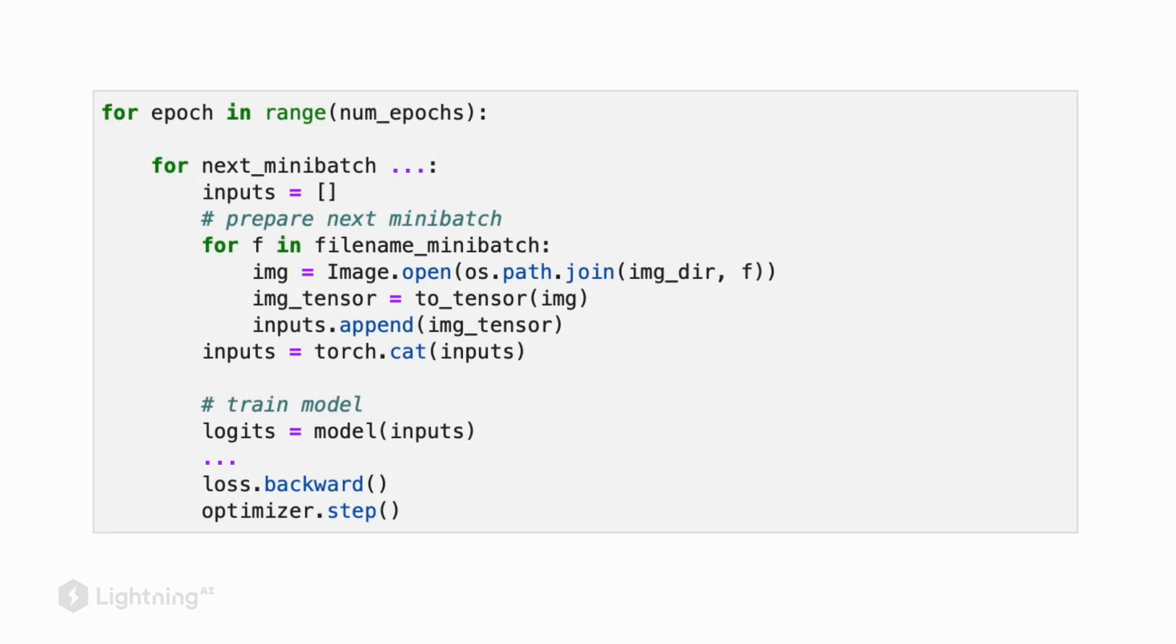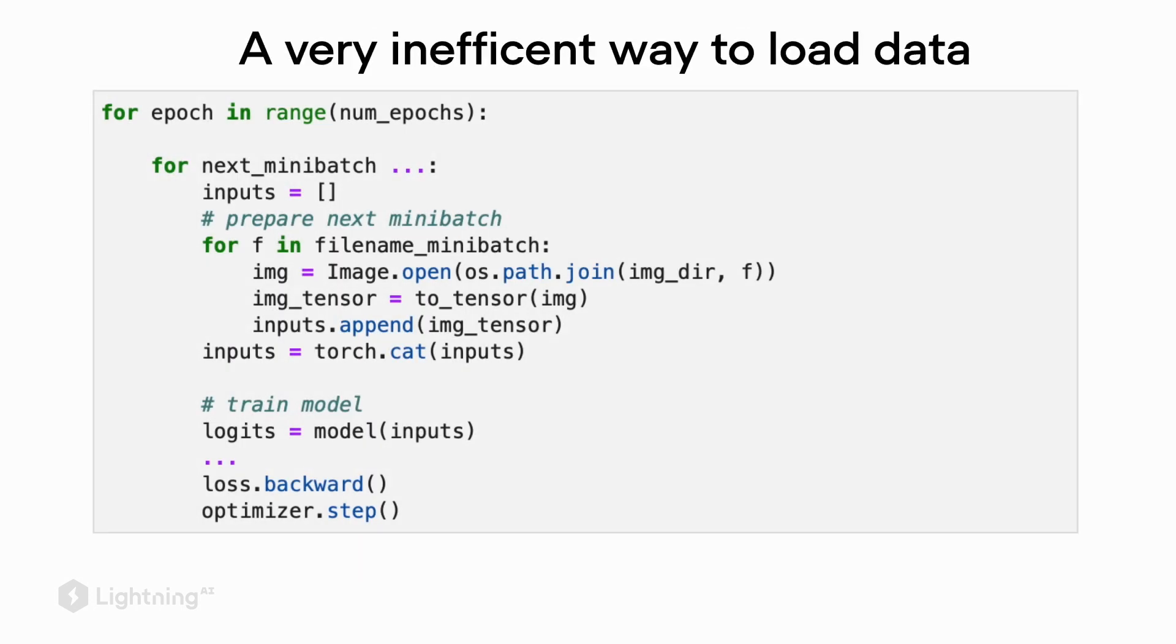So here's an example of how that looks like in code. So again, we iterate over the epochs, and then we load the data for each mini-batch. And then we feed these inputs to the model, where we then apply the loss computation, followed by backward, and followed by the optimizer dot step function, which will do the gradient updates of the weights.